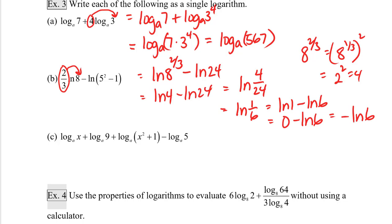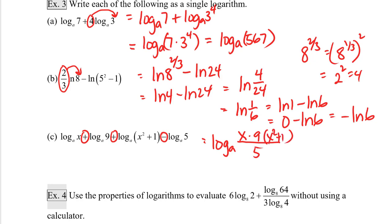Part c: log base a of x plus log base a of nine plus log base a of x squared plus one minus log base a of five. I can combine everything that's positive as factors in the numerator, and the one part that is negative goes in the denominator. So this becomes log base a of x times nine times x squared plus one over five, or log base a of nine x times x squared plus one, all over five.